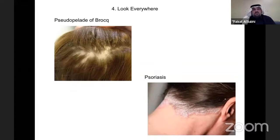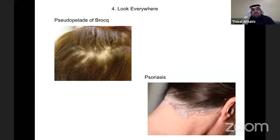Look everywhere in the scalp — even if the patient presents with hair loss in the front, examine the scalp as a whole, including the back and occipital area. For example, if you see pseudopelade of Brocq, this is an aftermath of scarring alopecia from the past, giving useful information that the patient had scarring alopecia previously. You might also find other dermatological conditions such as psoriasis.